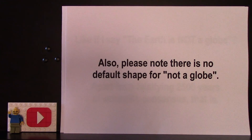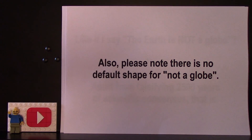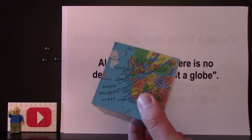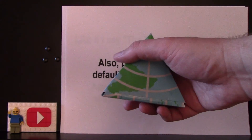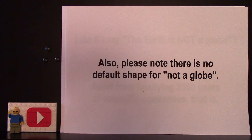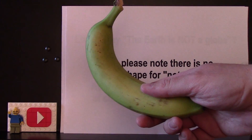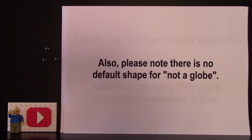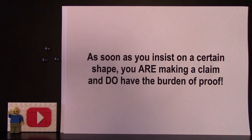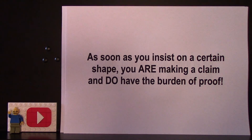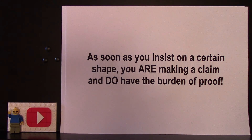Also, please note that there is no default shape for 'NOT a GLOBE.' It could be a cube, a tetrahedron, or a banana. As soon as you insist on a certain shape — maybe, let's say, flat — then you ARE making a claim, and you DO have the burden of proof.